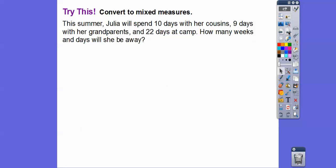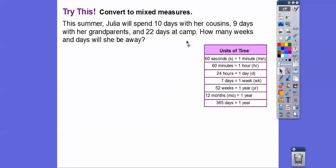We're going to convert to mixed measures. This summer, Julia will spend 10 days with her cousins, 9 days with her grandparents, and 22 days at camp. So how many weeks and days will she be away? Since it's asking for weeks, we're going to use this conversion, 7 days in a week.